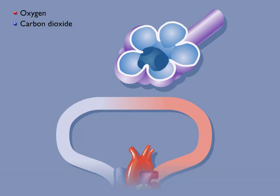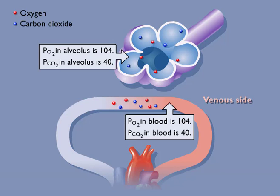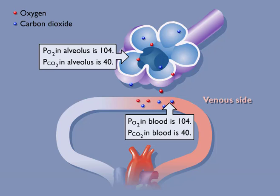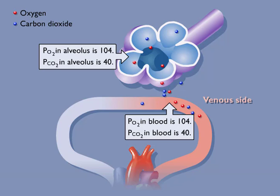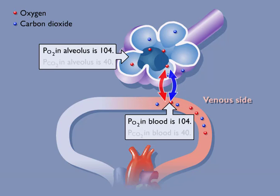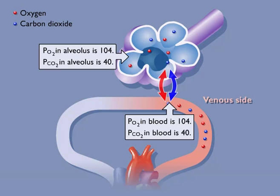Oxygen and carbon dioxide diffuse until there is no difference in partial pressure in the air and the blood. At this point, there is no more net movement of O2 or CO2. Therefore, at the venous ends of the pulmonary capillaries, the PO2 in the blood and alveoli is 104 and the PCO2 in the blood and alveoli is 40.